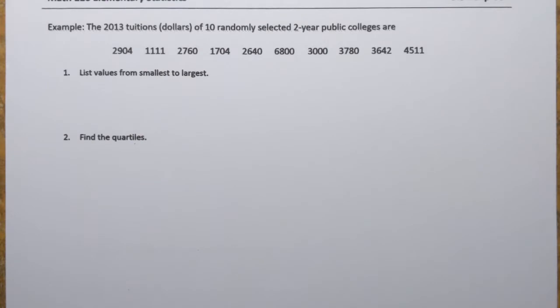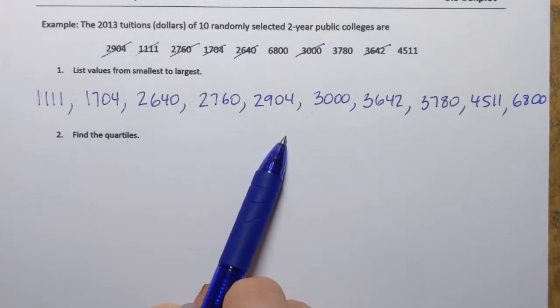We start by listing the values from smallest to largest. Here they are.